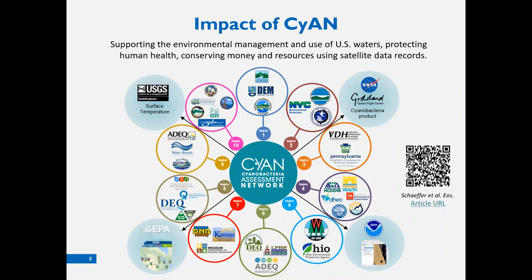I'd like to make the distinction between the multi-agency Cyan project that involves NOAA, NASA, USGS, and the EPA, and the mobile application called Cyan itself. The goal of the Cyan mobile app is to deliver near real-time satellite data on bloom status for freshwater lakes and reservoirs to the public, making satellite information accessible and easy to use, requiring no technical expertise. Although the Android platform was targeted initially, we do plan to have a responsive web app that would be cross-platform, working across various devices in the office or in the field via web browsers.